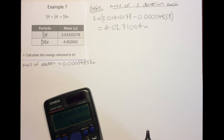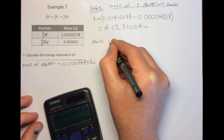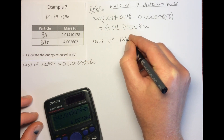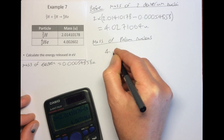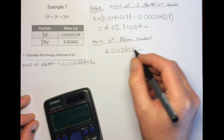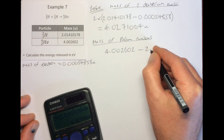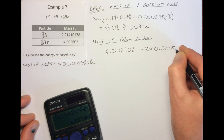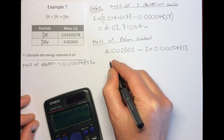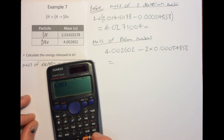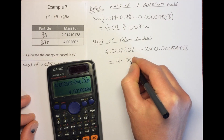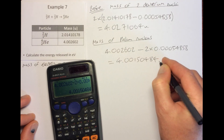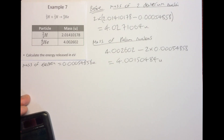Next, we work out the mass of the helium nucleus. That's 4.002602 minus the electron masses — helium has two protons so also two electrons, so we subtract two electron masses. That's 4.002602 − 2 × 0.00054858, which gives us 4.00150484 u. We can then work out the mass defect.